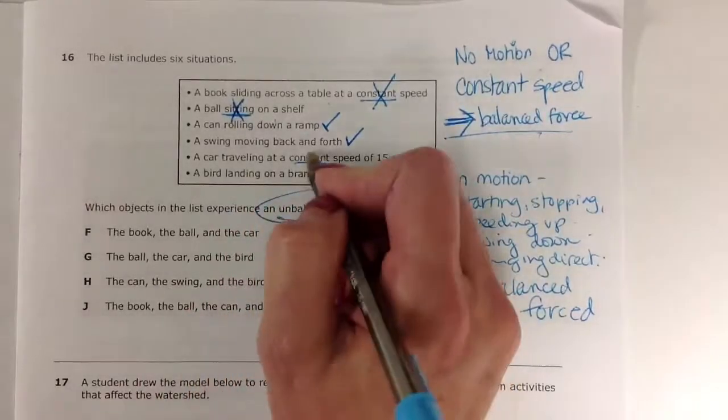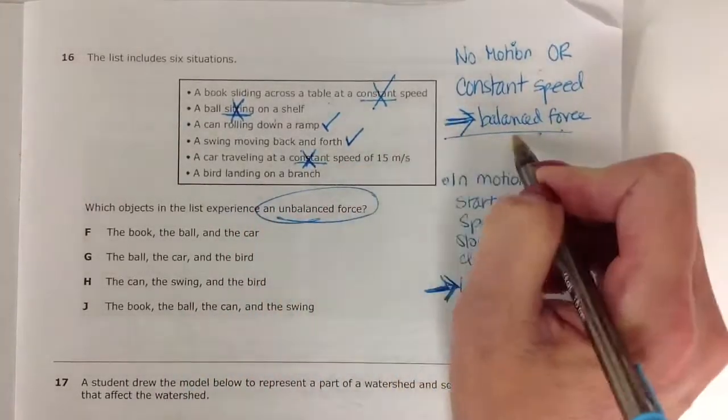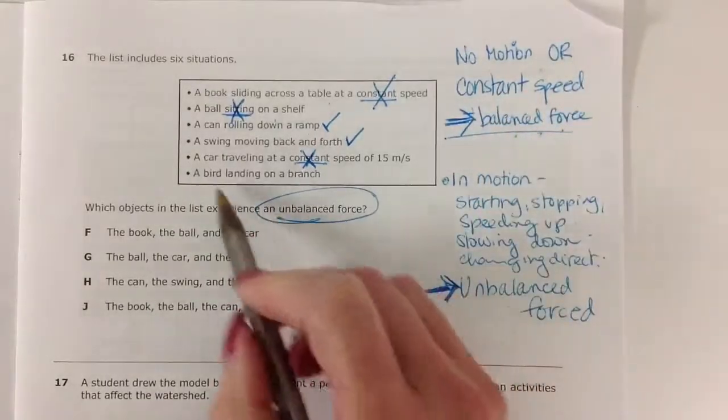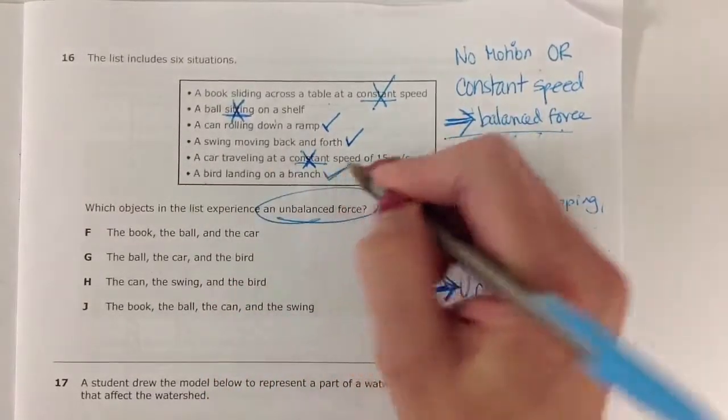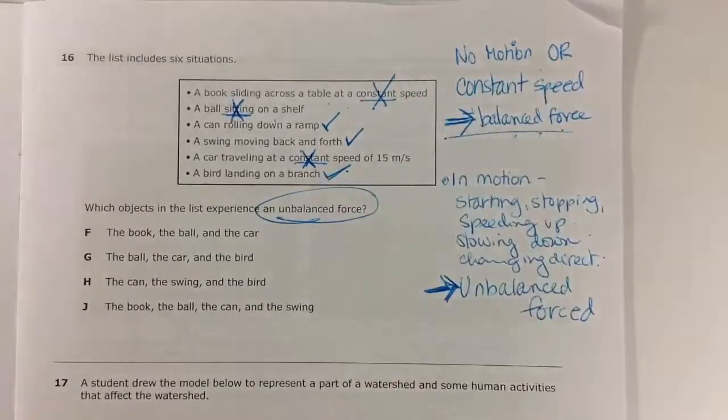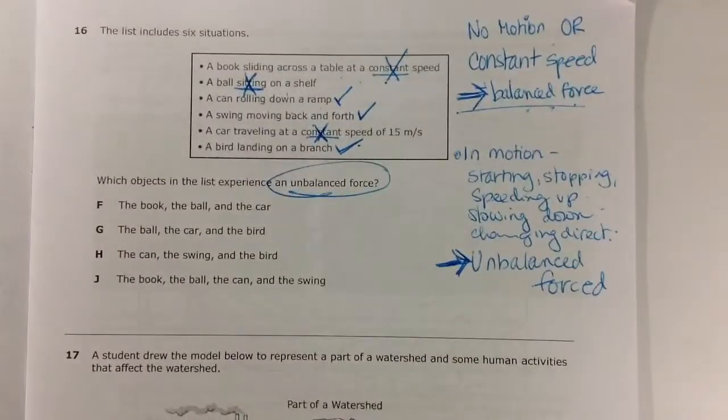Car traveling at constant speed, once again, is balanced. Constant speed, no motion, balanced forces. But the bird landing, that means the bird is slowing down to land. So we have one, two, three statements that coincide with unbalanced forces.